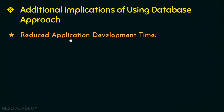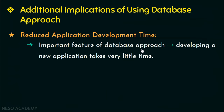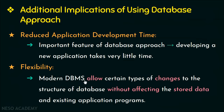The next implication is reduced application development time. An important feature of the database approach is that it takes very little time to develop new applications, like retrieving data for printing a report. Designing and implementing a database may take time, but once running, less time is required to create applications based on it. The next implication is flexibility — modern DBMS allows certain changes to the database structure without affecting stored data or existing application programs.